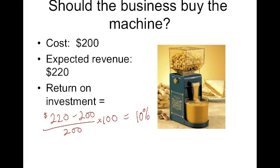The return on this investment that they're expecting is 10%. The way you figure return on investment is you take the revenue you expect to get — the $220 — minus the cost of the machine, take that amount divided by the cost of the machine. It's kind of like new minus old over old: the new amount you're going to have compared to the old amount you're spending for the machine, over the old amount you're spending for the machine, times 100.